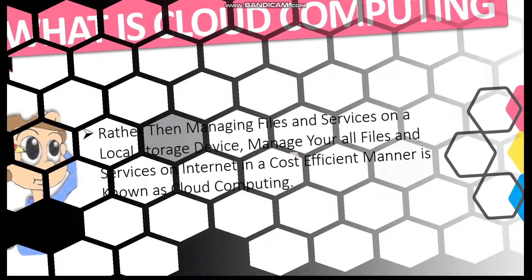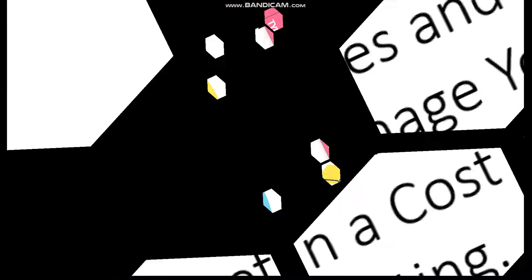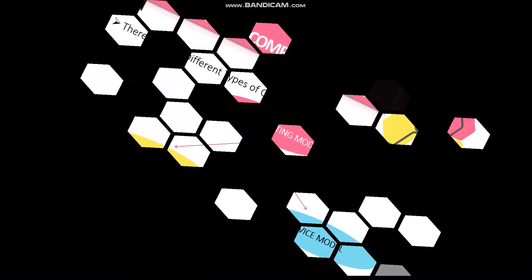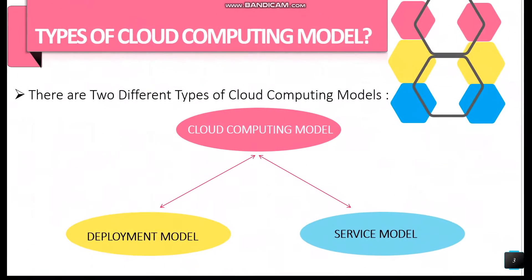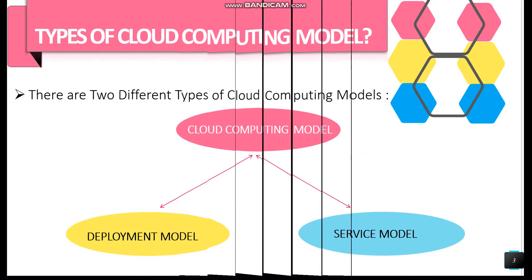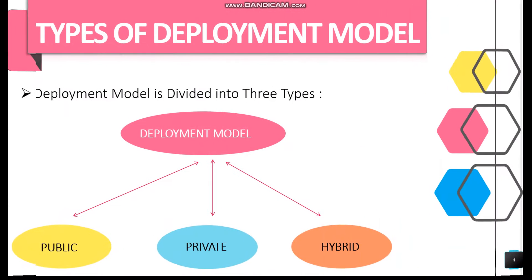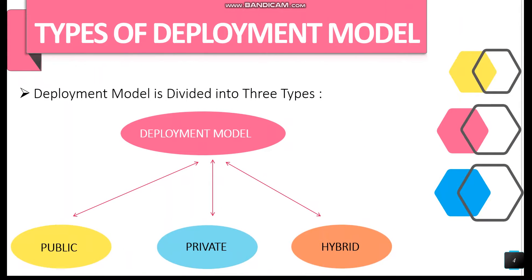There are two different types of cloud computing models: deployment model and service model. Further, the deployment model is divided into three types: public, private, and hybrid cloud.